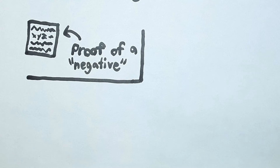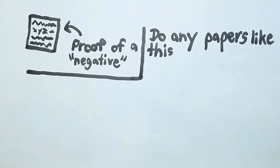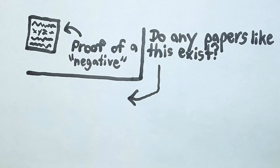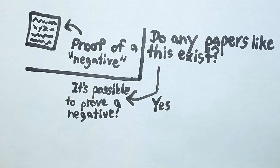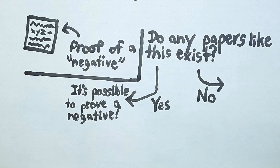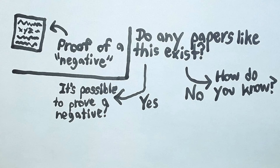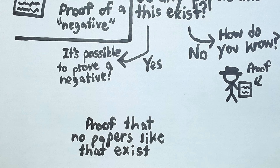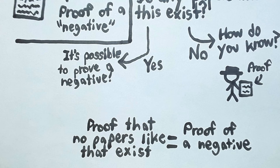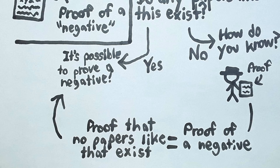Imagine a paper with a proof of a negative on it. Do any such papers exist? If any papers do exist, or even could exist, then it's possible to prove a negative. But if you think that there are no papers like this, I'm going to ask you: how do you know? You'll respond with an argument or a proof for why these papers couldn't exist. But a proof for why something cannot exist is a proof of a negative. So, if you cannot prove a negative, then that's a proof that no paper like this exists — which is itself the proof of a negative.